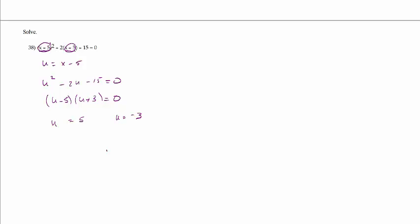Now I have to go back and remember to substitute what u was. So u is equal to x minus 5. If u equals 5, then x minus 5 equals 5. And likewise, if u equals negative 3, then x minus 5 equals negative 3. Now I solve these two linear equations. Adding 5 to both sides, we have x equals 10. And over here, adding 5 to both sides, we will get x equals 2.